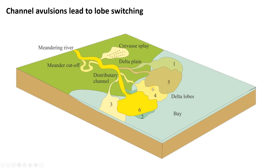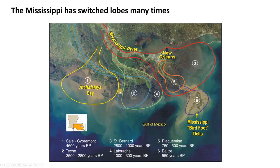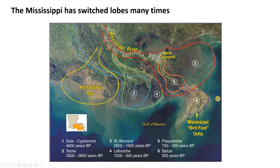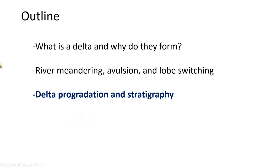When you look down on the Mississippi Delta, what you're seeing is the product of a river that's been moving around to different places over time — it was here for a while, then here, and so on. Today the modern Mississippi River is delivering sediment out to lobe number six.